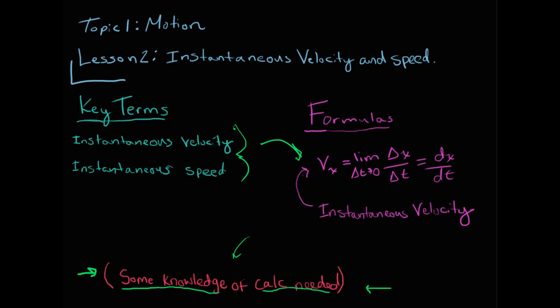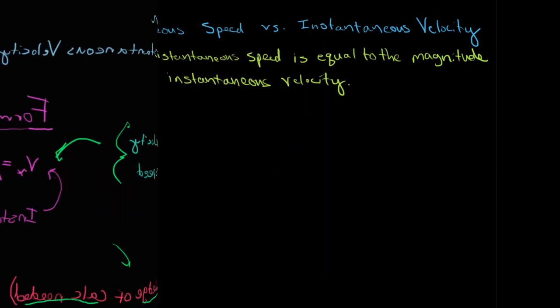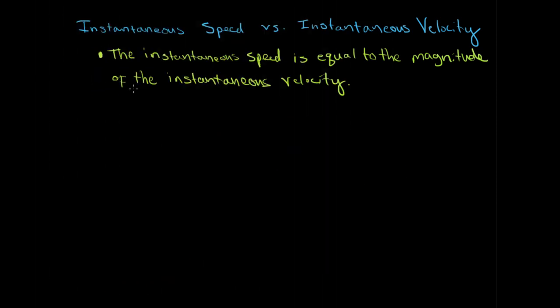So anyway, here we go. First off, what is the difference between instantaneous speed and instantaneous velocity? Well, the instantaneous speed is equal to the magnitude of the instantaneous velocity.